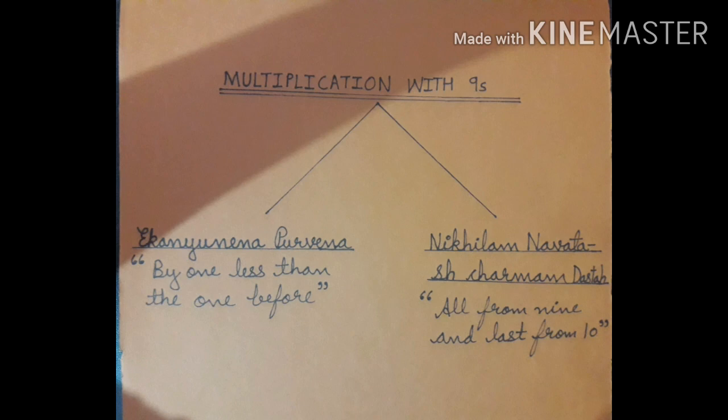In multiplication with 9, there are two tricks. Ekayunena Purvena and Nikhilam Navataश Charamam Dashatah. These are the Sanskrit words of this trick. First, by one less than the one before. And second, all from 9 and last from 10. These two tricks we have to apply in our questions.